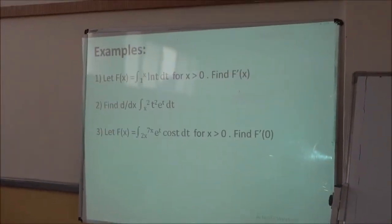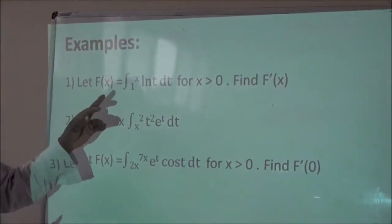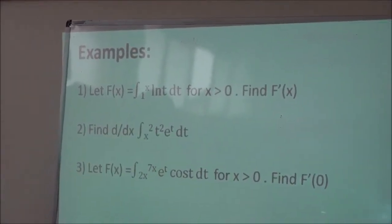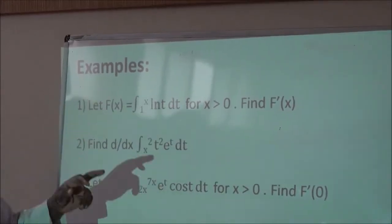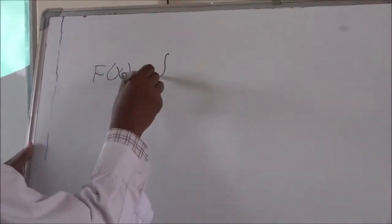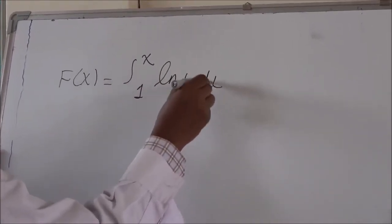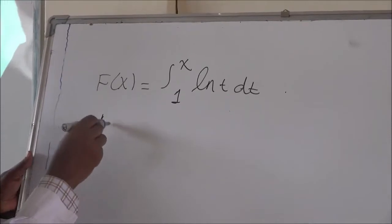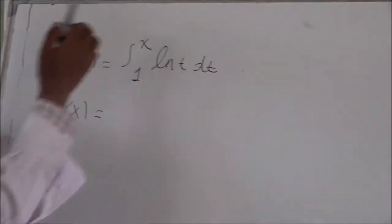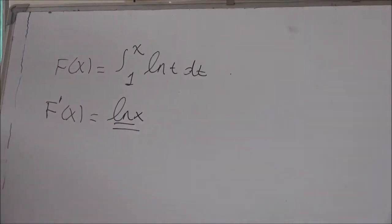Now let us see an application of this. Here we have given capital F(x) defined as the integral from 1 to x of ln(t) dt, for x greater than 0. The question is to find the derivative F'(x). Capital F(x) is the integral from 1 to x of ln(t) dt. F'(x) is a matter of writing the inner function in terms of x, so we simply have ln(x).